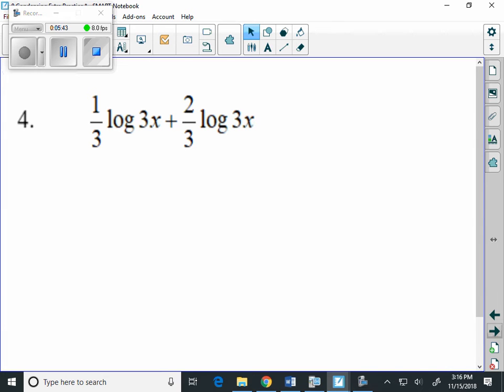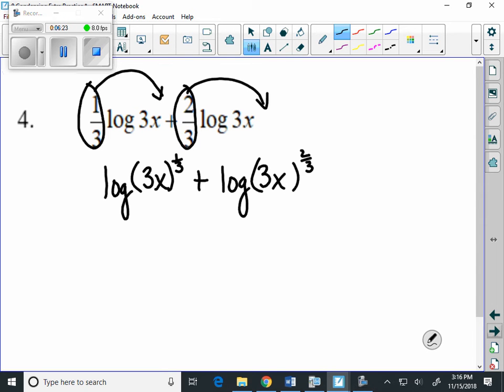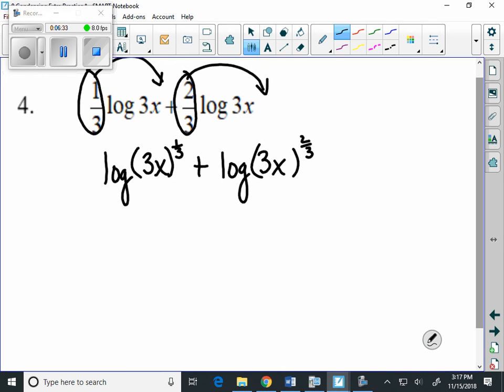Problem number 4, we have the same kind of idea here. We've got a fraction in front of both logarithms. When we simplify, this is going to be log of 3x to the 1/3, and this is going to be log of 3x to the 2/3. All that we did is we took this 1/3 and wrote it as an exponent. We took this 2/3 and wrote it as an exponent, which is our power property of logarithms.